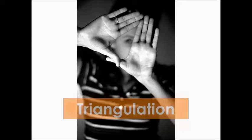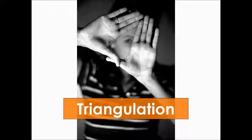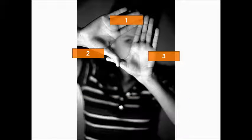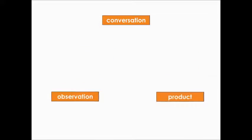We want to look more deeply into gathering evidence of learning and triangulation is the model we're exploring. So what exactly is triangulation? It involves gathering evidence of student learning over time from three different sources: observation, conversation and product.